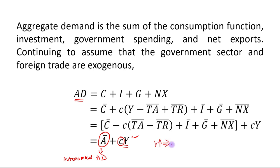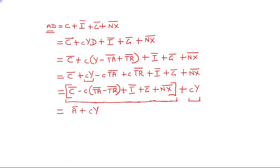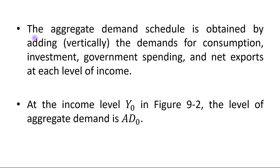So we can say: if there is an increase in income, then consumption demand will be increased, due to which aggregate demand will be increased. The aggregate demand schedule is obtained by adding vertically the demands for consumption, investment, government spending, and net exports at each level of income. At income level Y₀ in figure 9.2, the level of aggregate demand is AD₀.